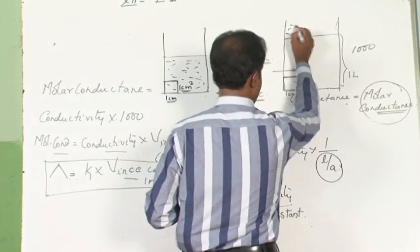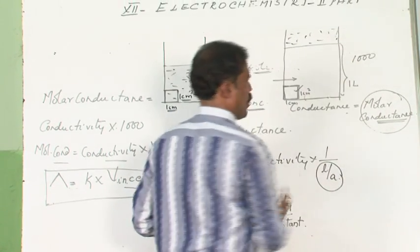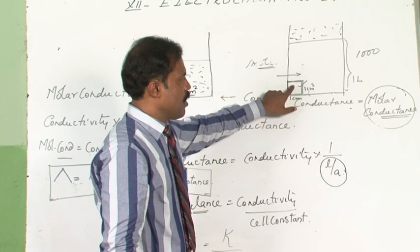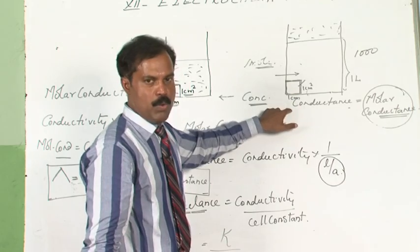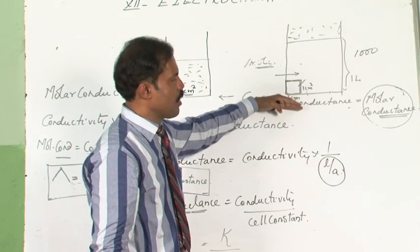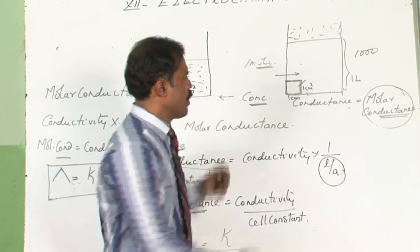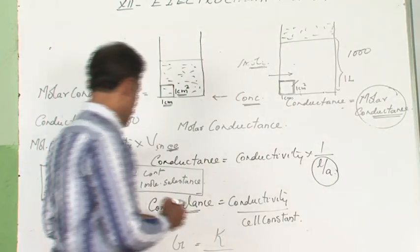Obviously when you dilute a solution, the number of particles within 1 cc solution will come down. So what will happen to conductivity? It is very easy to understand - the conductivity decreases with dilution.